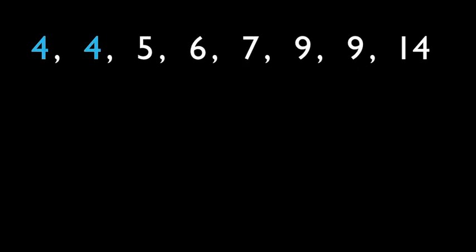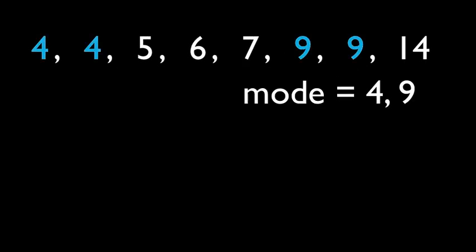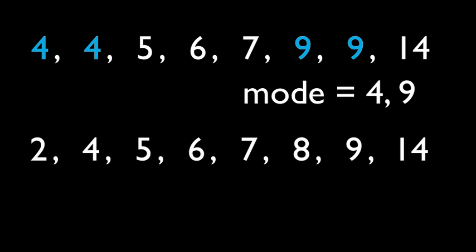Basically, just remember that mode is the number in the data set that repeats itself the most. There can be more than one mode, or there can be no mode. Therefore, mode is the most one — more than one or none.